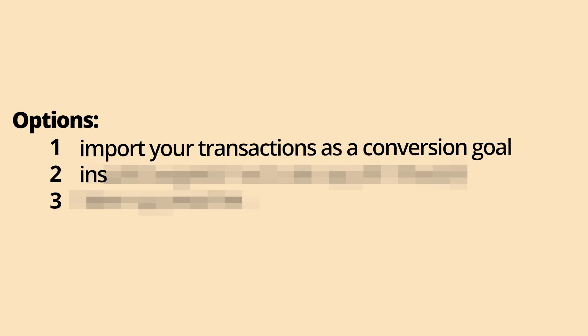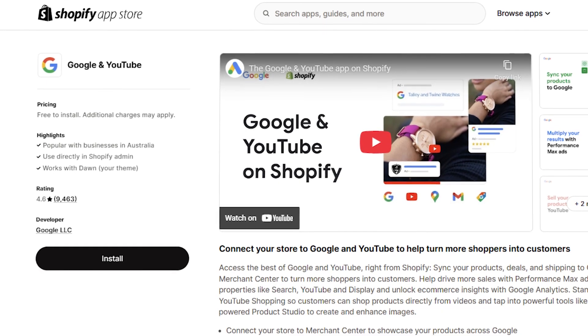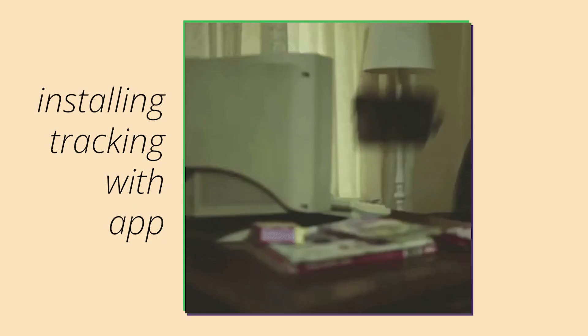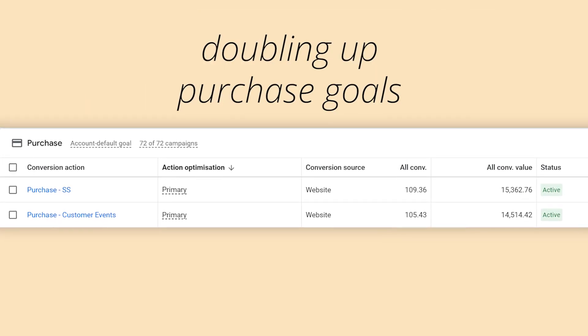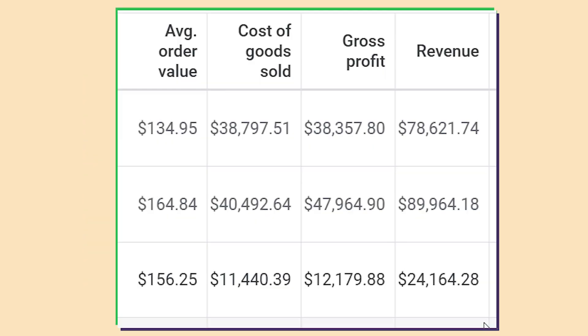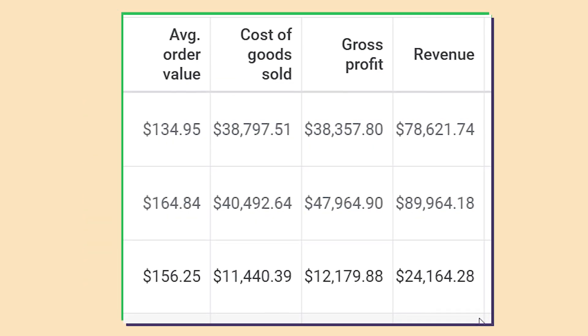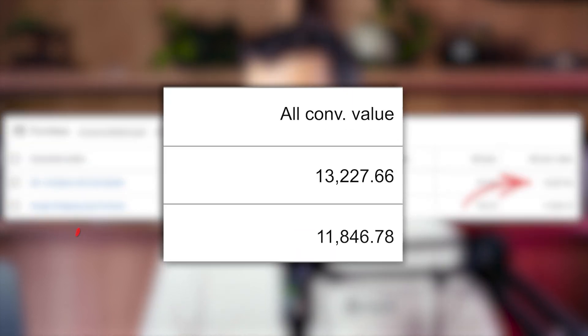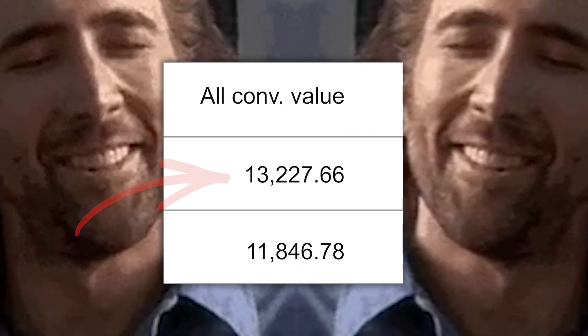Option two: you can install the Google and YouTube app for Shopify. This is better than the Google Analytics import. It seems appealing to use the app for conversion tracking because you can click a few buttons to install the tracking, but conversion features are missing. Purchase tracking is easy to set up yourself when you follow this guide. People still mess up conversions with the app by doubling up purchase goals. The downside of the native app is it makes no use of conversion features like cart data that result in more data — like gross profit and more purchases tracked.